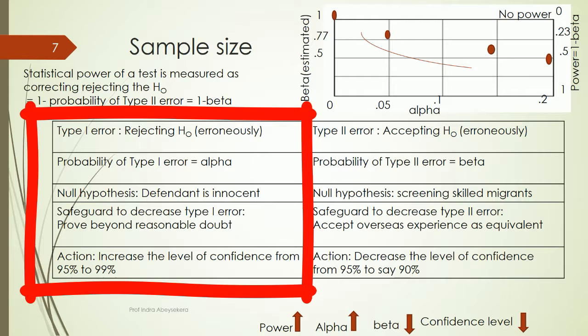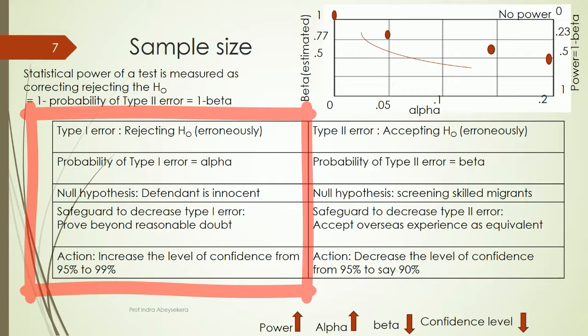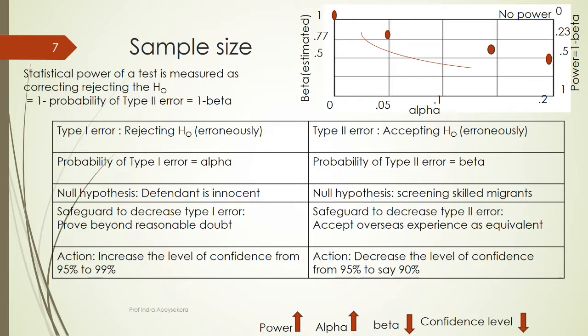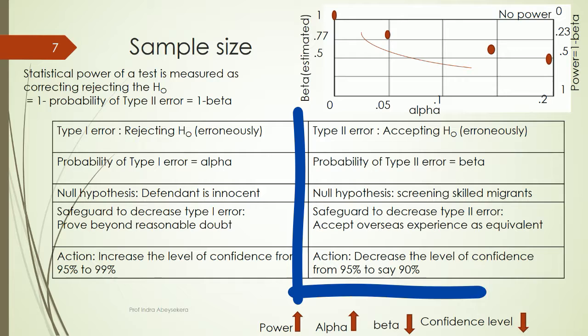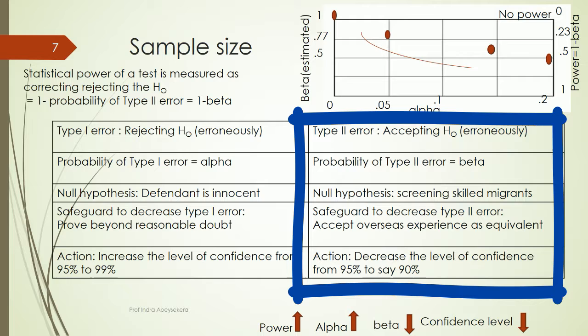But when we increase the confidence level and alpha decreases, beta increases — they have a reverse relationship. Beta is erroneously accepting the null hypothesis. When we have such a large level of estimated confidence, we can erroneously accept the null hypothesis. For example, when screening skilled migrants for a country, you might accept overseas experience as equivalent to domestic experience, thereby increasing beta.